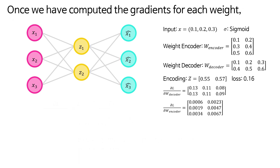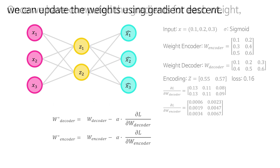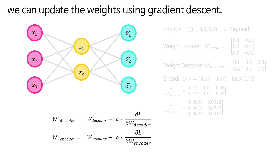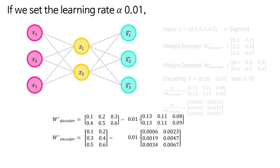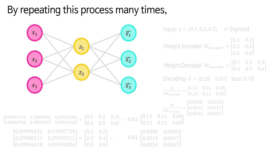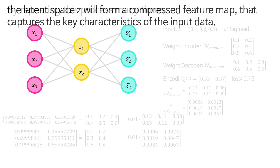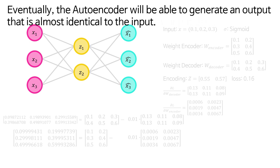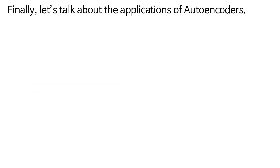Once we have computed the gradients for each weight, we can update the weights using gradient descent. If we set the learning rate to 0.01, the new weights are updated accordingly. By repeating this process many times, the latent space z will form a compressed feature map that captures the key characteristics of the input data. Eventually, the autoencoder will be able to generate an output that is almost identical to the input.